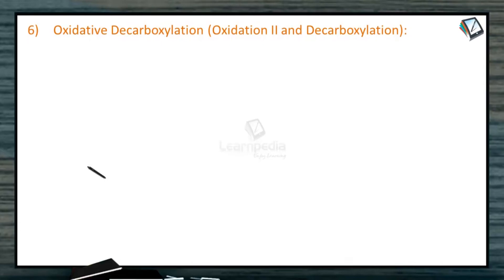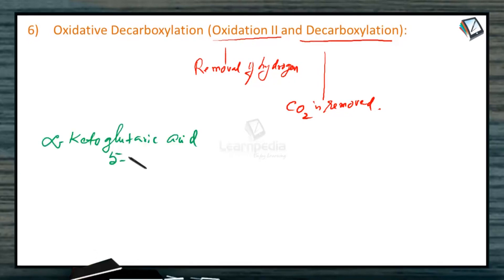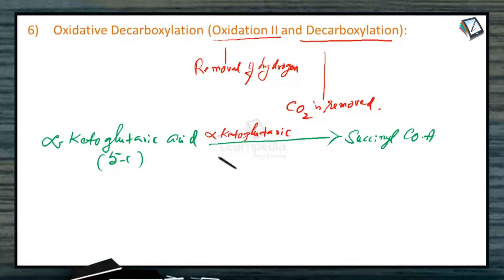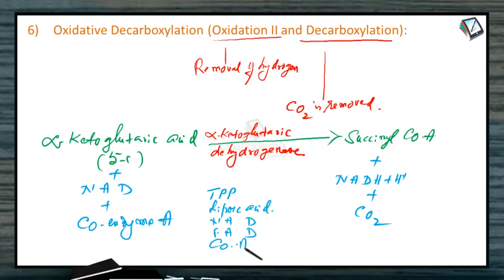The next reaction is oxidative decarboxylation, similar to the conversion of pyruvic acid to acetyl coenzyme A — the link reaction. It involves both oxidation (removal of hydrogen) and decarboxylation (removal of CO₂). Six cofactors are involved: TPP, lipoic acid, NAD, FAD, coenzyme A, and magnesium. Alpha-ketoglutaric acid (5-carbon) combines with NAD and coenzyme A; the products are succinyl coenzyme A, NADH₂, and carbon dioxide. The enzyme is alpha-ketoglutaric dehydrogenase.